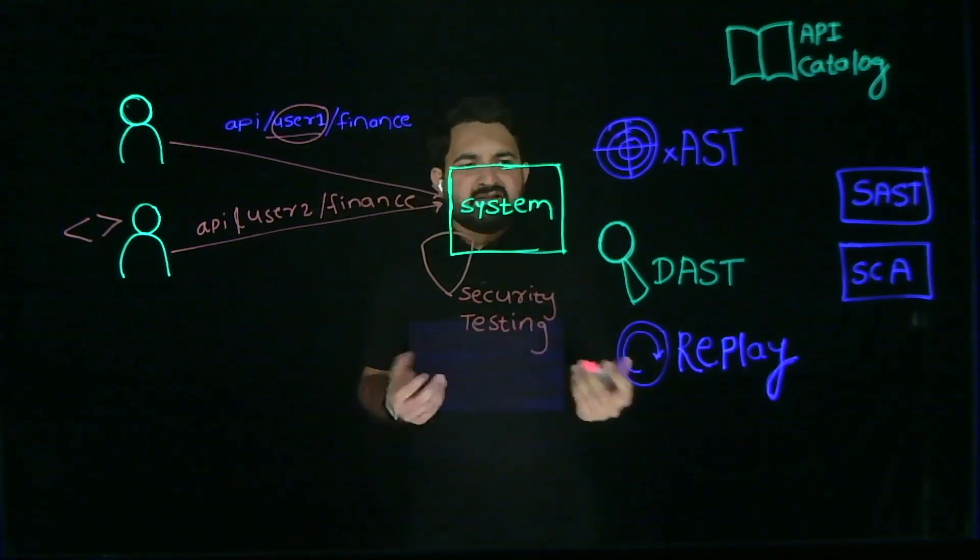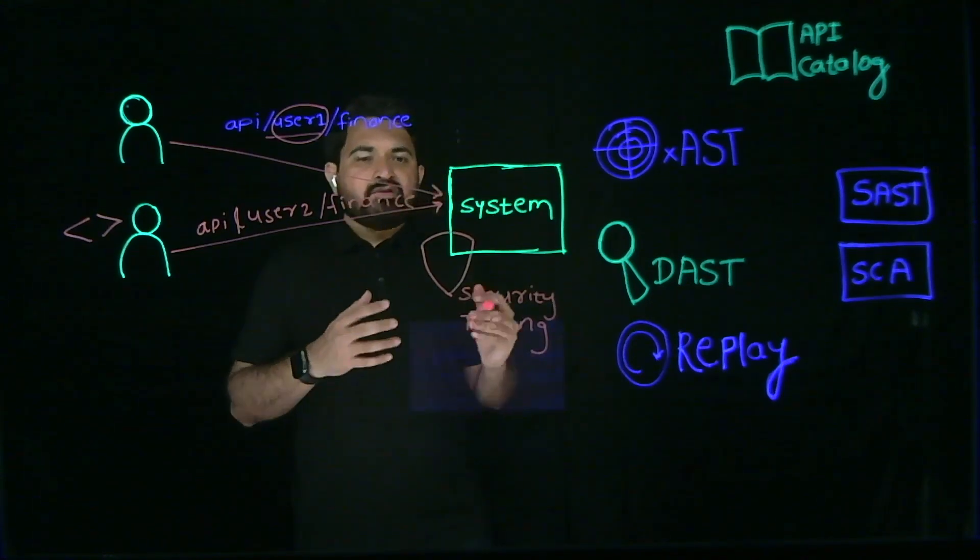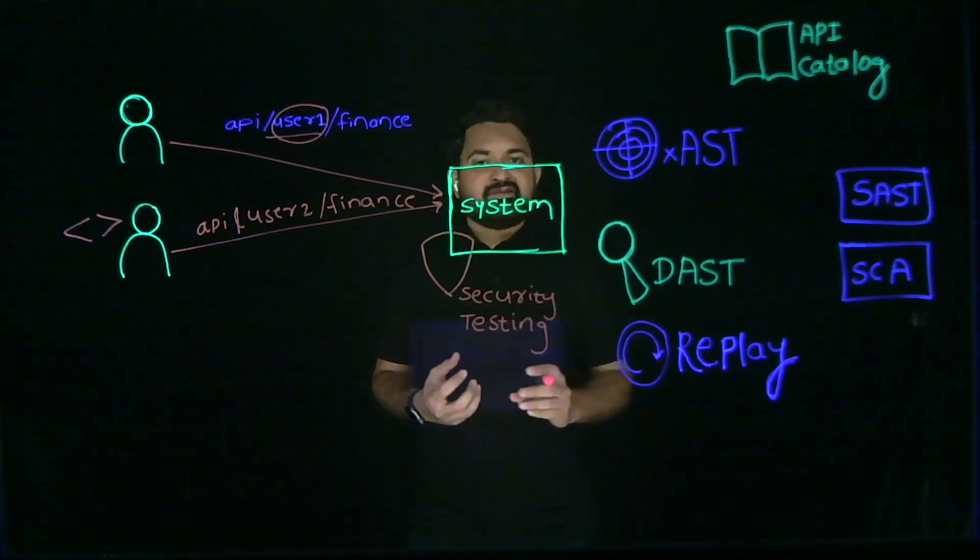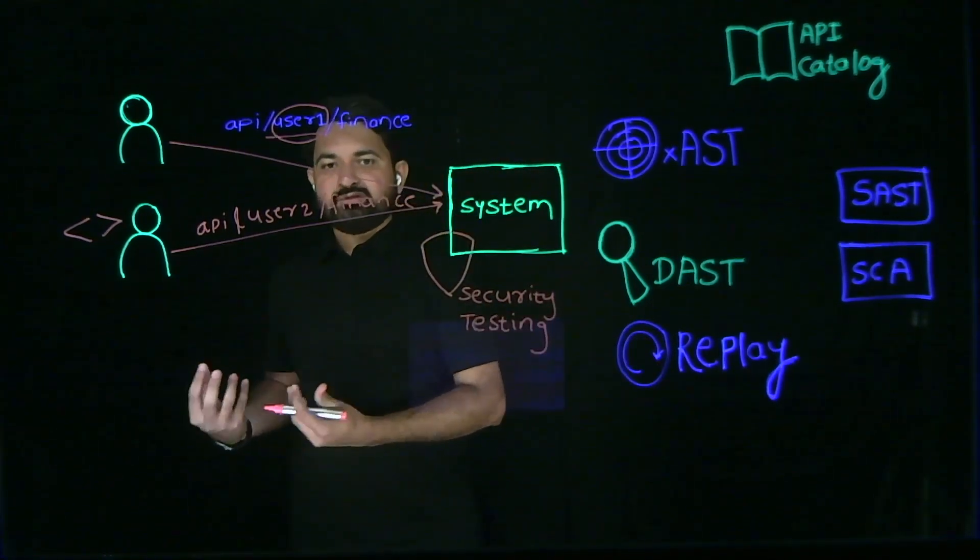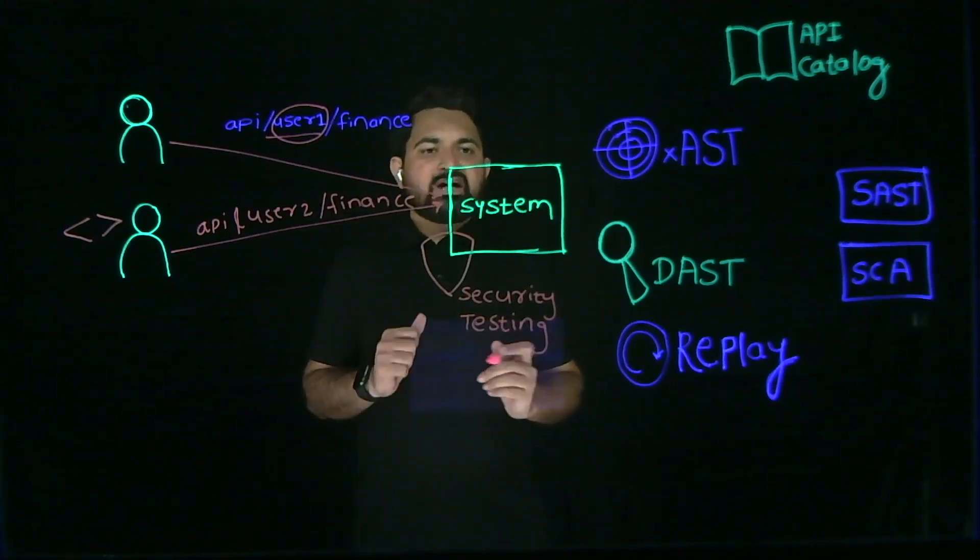DAST is like a magnifying glass. It tests for different sets of vulnerabilities on the basis of default rules which it supports. It can't catch BOLA.